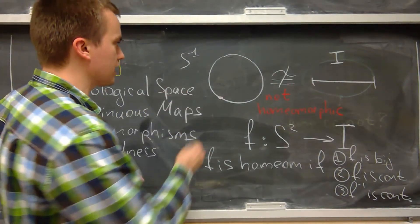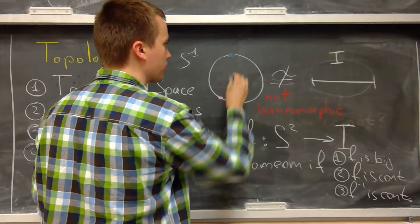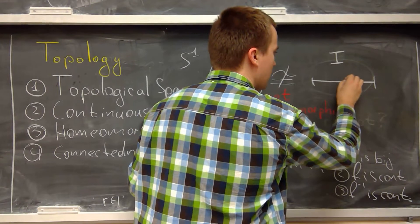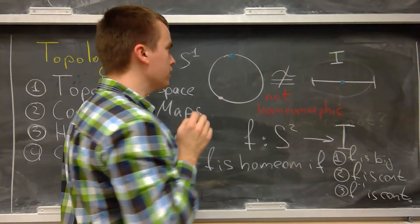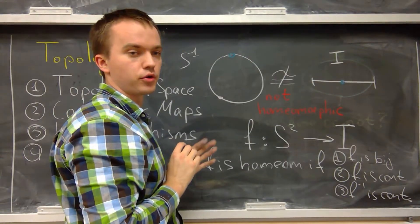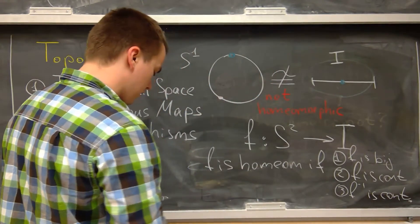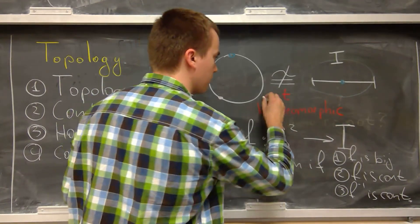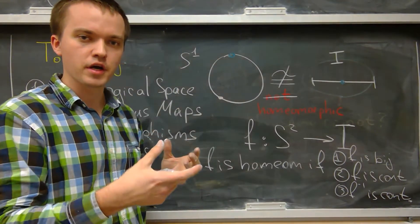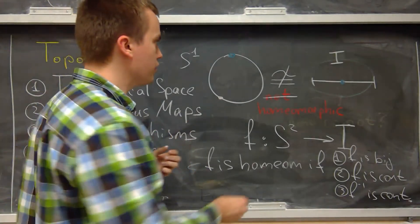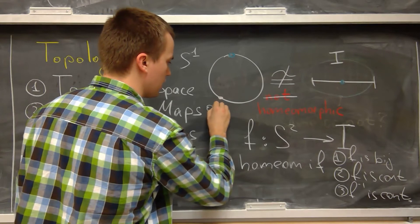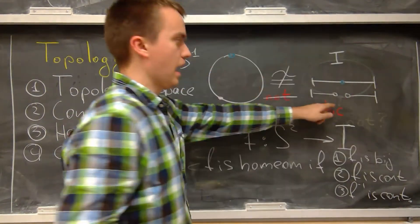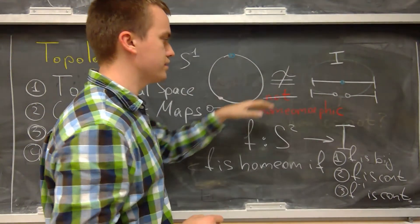Similarly, if one space is compact (closed and bounded), the other must be too. Now, if I remove one interior point from the circle, since f is bijective I must remove exactly one point from the unit interval. If the circle and the interval were homeomorphic, they would need to have the same number of connected components after removing that point. The circle minus a point remains one connected component, but the interval minus an interior point gives two connected components — so these two spaces are not homeomorphic.